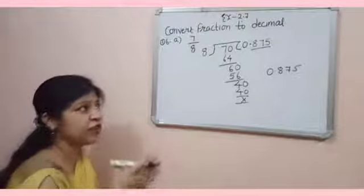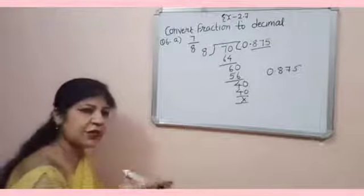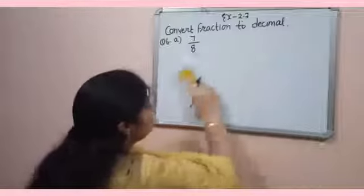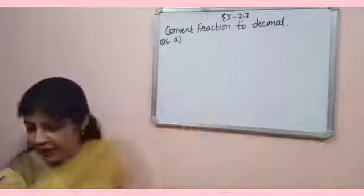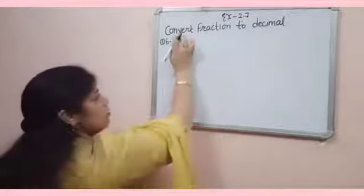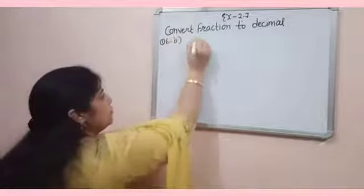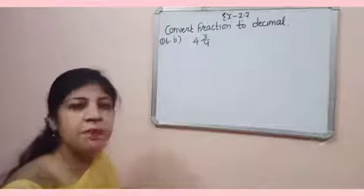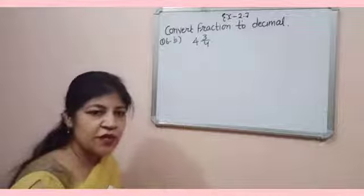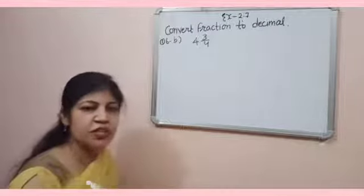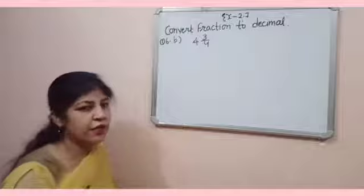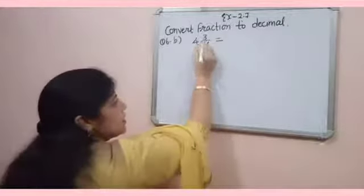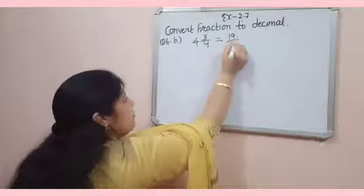You can convert fraction to decimal or decimal to fraction. So, let's take one more example. Like, 4 and 3 by 4. And, you know very well, it is a mixed fraction. So, first convert into improper fraction, and then convert to decimal. Then, it will be 4 times 4, 16 and 3, 19 by 4.